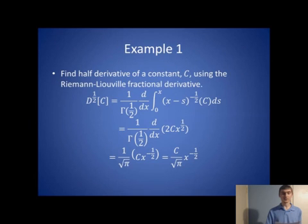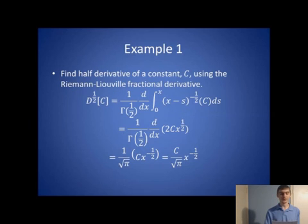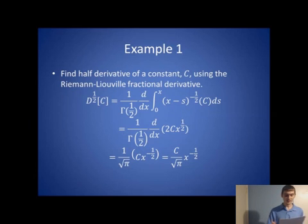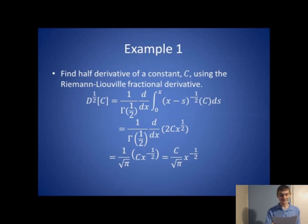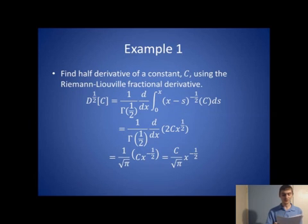Now we look at some examples of fractional calculus. The first example is to find the half derivative of a constant using the Riemann-Liouville fractional derivative. Using the formula, we get 1 over gamma(1/2) times d/dx times the integral from 0 to x of (x minus s) to the negative one-half times c ds. Evaluating the integral gives 2c times x to the one-half. After differentiating and evaluating the gamma function, we get c over the square root of pi times x to the negative one-half.